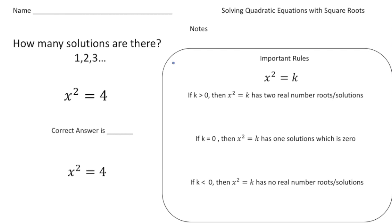So take a look at this first question here. It says how many solutions are there to this first question x squared equals four. So think about it. How many solutions are there? Is there one solution? Are there two solutions? Three solutions? And the correct answer actually is two. Because x could be two or could also be negative two. Because two times two gives us four but also negative two times negative two also gives us four.